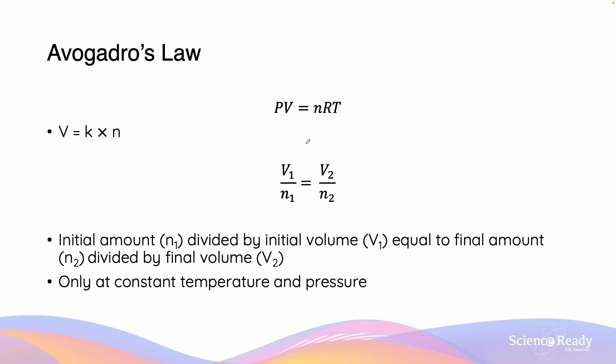As previously described, we can derive the mathematical relationship V equals to K times N from the ideal gas law PV equals to NRT, where P and T are constant.